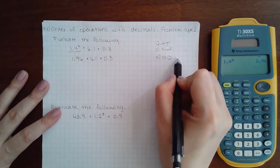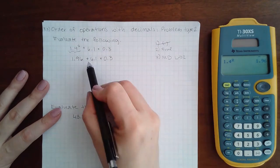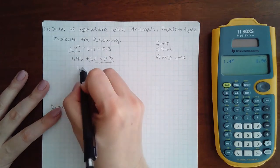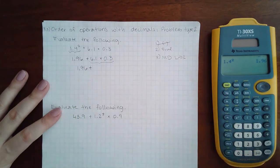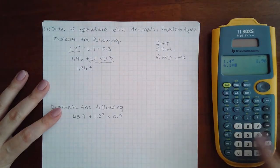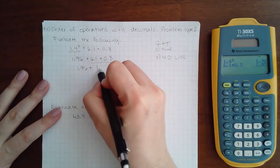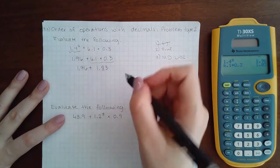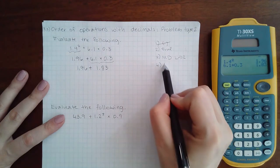So I see a multiplication here, so I'm going to bring down the beginning of the problem and do 6.1 times 0.3. I get 1.83, and then finally the last is to add or subtract left to right.